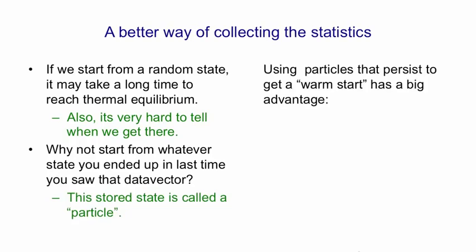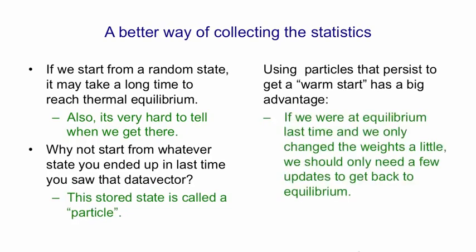Using particles that persist gives us a warm start and it has a big advantage. If we were at equilibrium before and we only updated the weights a little bit, it'll only take a few updates of the units in a particle to bring it back to equilibrium. We can use particles for both the positive phase, when we have a clamped data vector, and for the negative phase, when nothing is clamped.